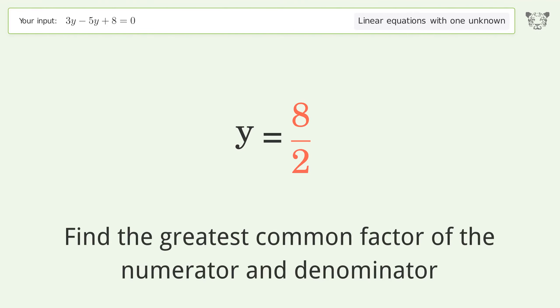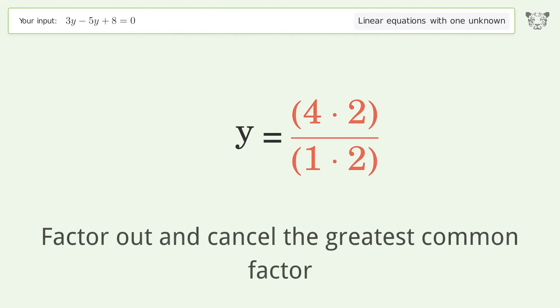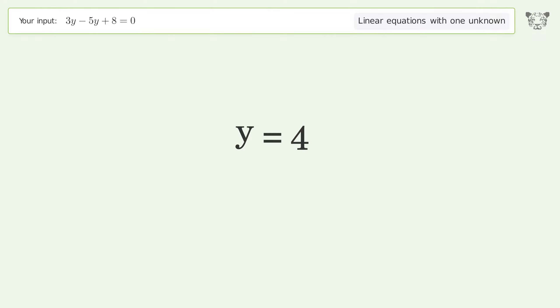Find the greatest common factor of the numerator and denominator. Factor out and cancel the greatest common factor. And so the final result is y equals 4.